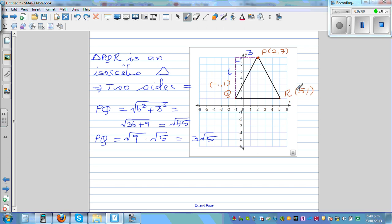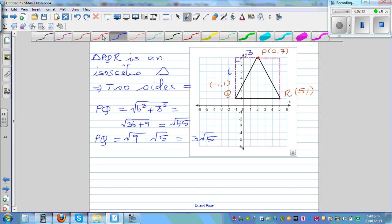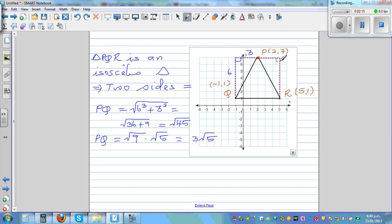So what is PR? Again, let's draw a right angle triangle joining these two points. Same principle here, same idea. So this distance from this point to this point is 3, and this distance is 6.